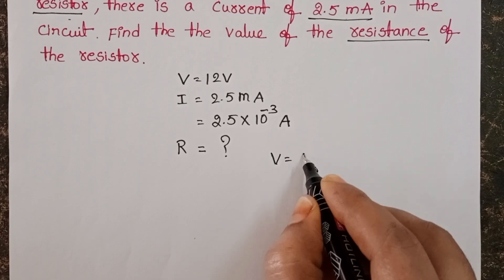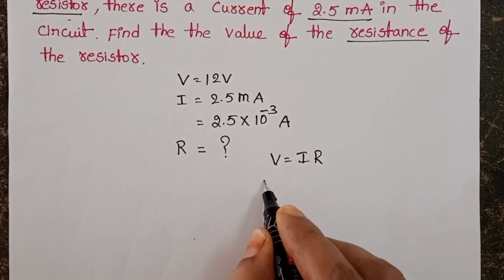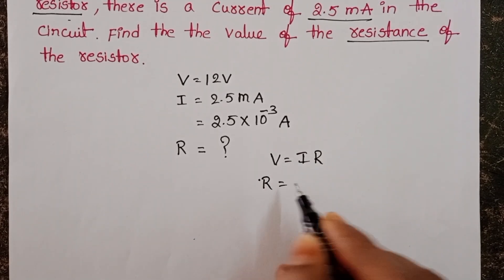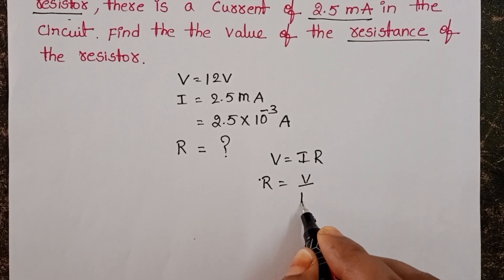Take Ohm's law. V equals IR. From this, R equals V by I.